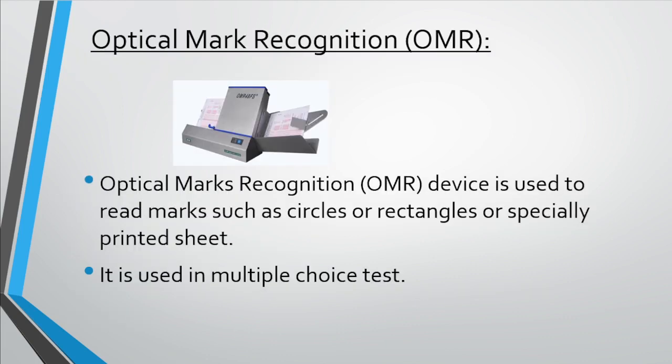Next is optical mark recognition (OMR). A device used to read handwritten marks such as circles or rectangles on a specially printed sheet. It is used in multiple choice tests where there are four options — A, B, C, and D — for every statement, and we mark any one option. After solving all the questions, an OMR sheet is generated and then scanned in an OMR scanner. The OMR scanner scans the sheet using a light beam, and then the result of the test is calculated.